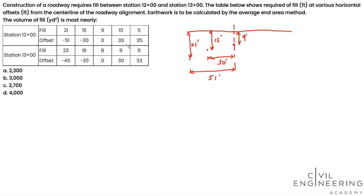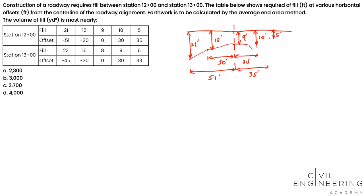We'll do the same thing to the right. At 30 feet away from the center line to the right, we need to fill by 10 feet. And finally, at 35 feet away from the center line, we need to fill by 5 feet. Let's connect all these points — this is the approximate profile of the original ground.